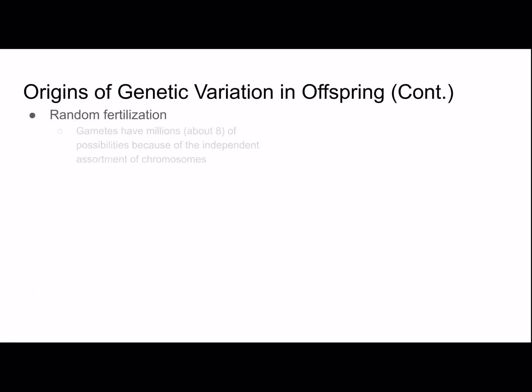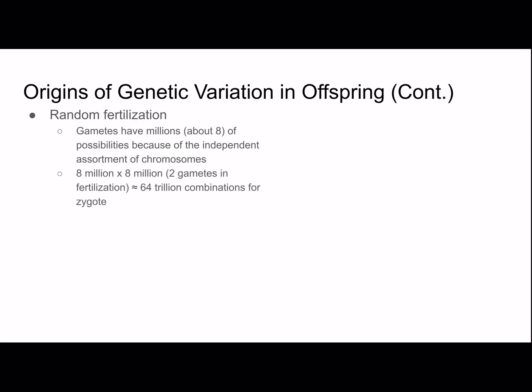Random fertilization adds even more variation. Gametes have about 8 million possibilities because of independent assortment of chromosomes. With two gametes in fertilization, that would be roughly 8 times 8 — 64 trillion combinations for the zygote. Combined with crossing over, this creates an extremely large number of possibilities, showing how every individual is unique from everyone else.